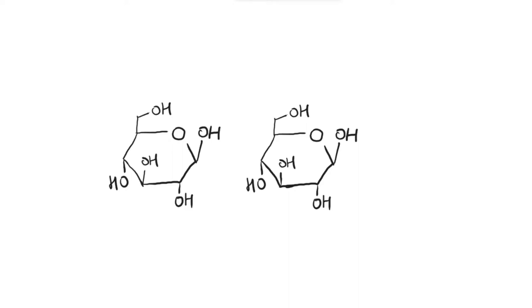Similar to alpha-glucose molecules, beta-glucose molecules can join together by 1-4 glycosidic bonds. Carbon number one and carbon number four are the relevant carbons. However, you can see that the hydroxyl group on carbon number one is too far away from the hydroxyl group on carbon number four of the other molecule, so the condensation reaction can't really happen between these two — they're simply too far apart for the hydroxyl group to steal the hydrogen atom from the other hydroxyl group.